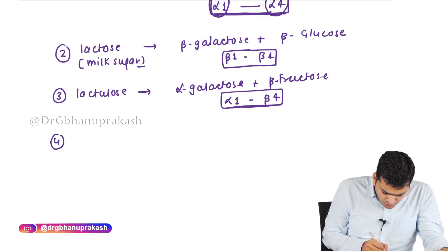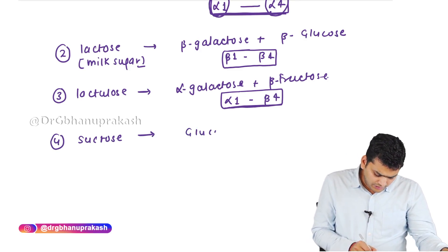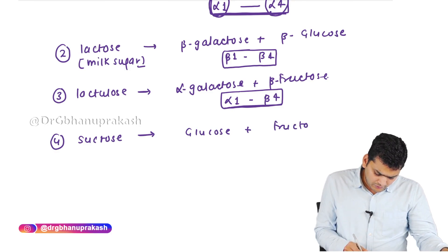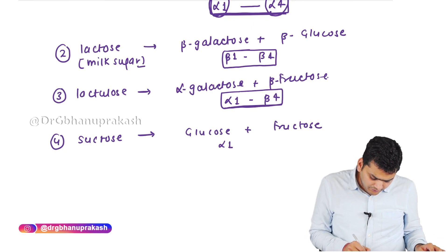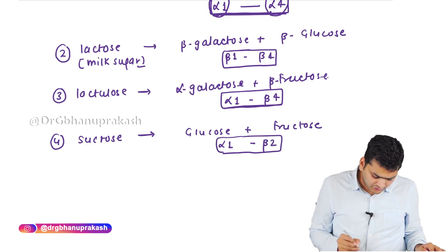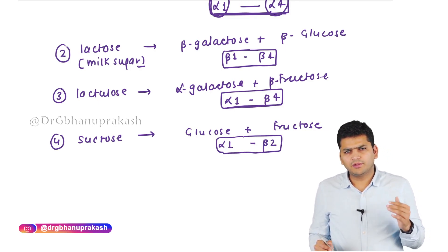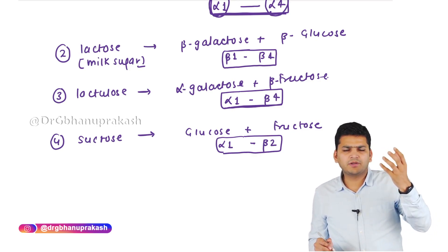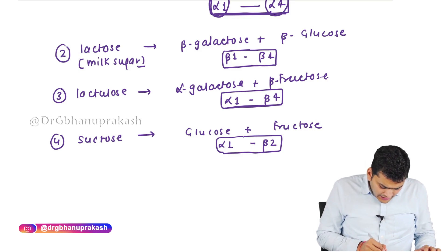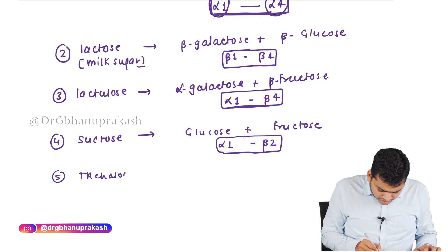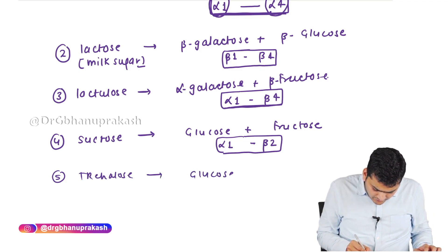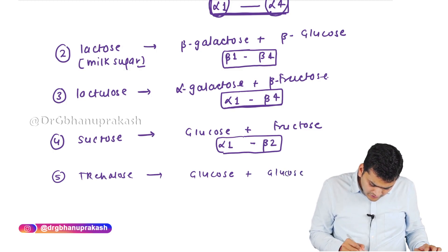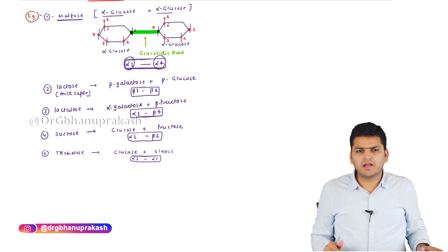The fourth example is sucrose, composed of glucose and fructose. Glucose is in the alpha form and fructose in the beta form, giving a bond direction of alpha-1,beta-2. The fifth example is trehalose — glucose uniting with glucose — with a bond direction of alpha-1,alpha-1.